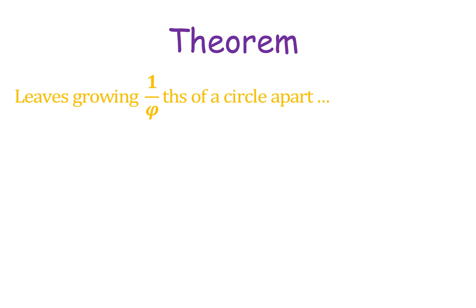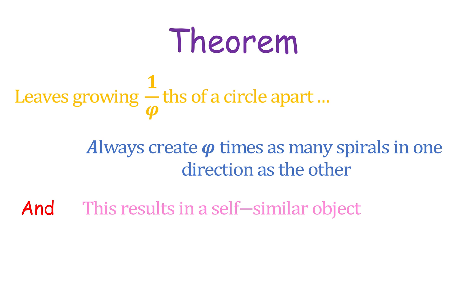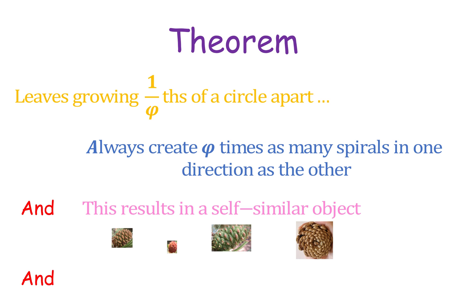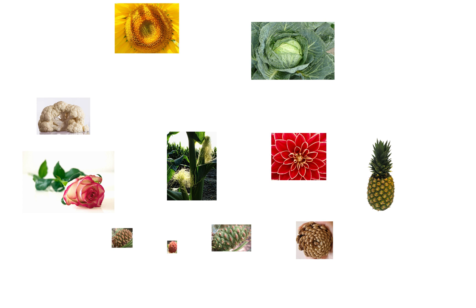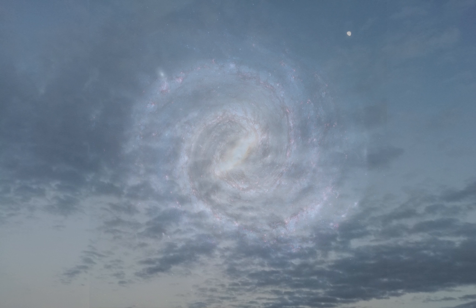Either way, the main point is: leaves grow one-phi-th of a circle apart. They always create phi times as many spirals in one direction as the other. This results in a self-similar object — meaning no matter how much it grows outward or inward, it always has the same proportions. And this maximizes the spacing between leaves. This is true not just for pine cones, but also for fruits, vegetables, flowers, and in general, circular growing things with leaf-like parts. To maximize spacing, just use phi — the divine ratio that's truly divine.